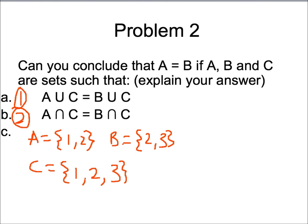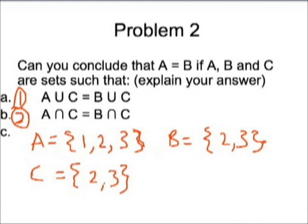Now looking at the second problem, let's say set A includes elements 1, 2, and 3, B includes elements 2 and 3, and C also includes elements 2 and 3. The intersection of A and C is 2 and 3, and the intersection of B and C is also 2 and 3, which makes the intersections equal. However, sets A and B are not the same, because set A includes element 1 while B only contains 2 and 3. Therefore, both statements 1 and 2 are not sufficient to conclude that A equals B.